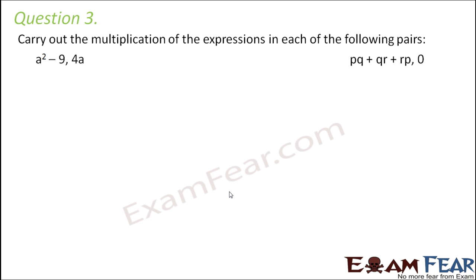Question number three: Carry out the multiplication of the expressions in each of the following pairs. Let's look at the first one. It is a² - 9 multiplied by 4a. This is something like a multiplied by b can be written as b multiplied by a, so this can be written as 4a into (a² - 9).